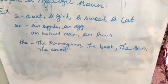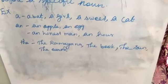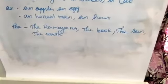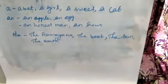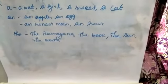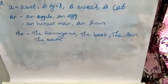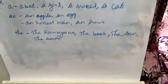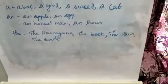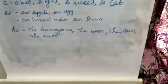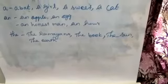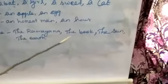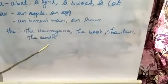Next, the article the. The is used before the nouns which are definite and denote the whole group of nouns. Also, before the names of objects which are only one, the article the should be used. Example: the Ramayana, the book, the sun, the earth, the moon.